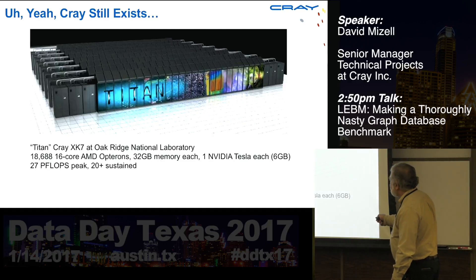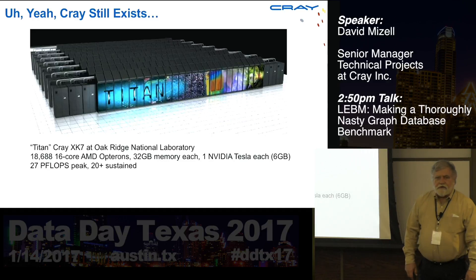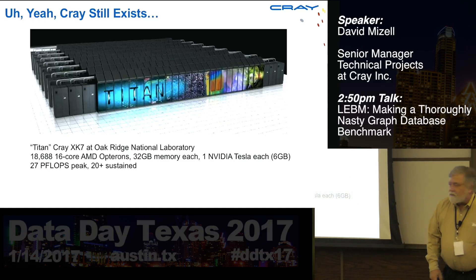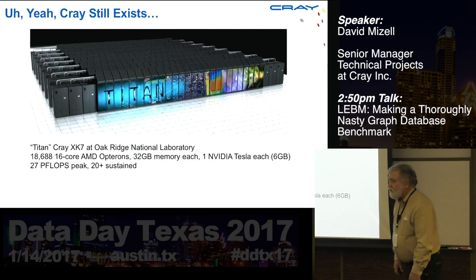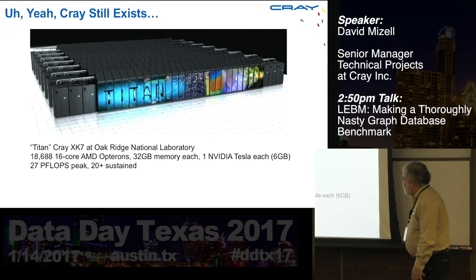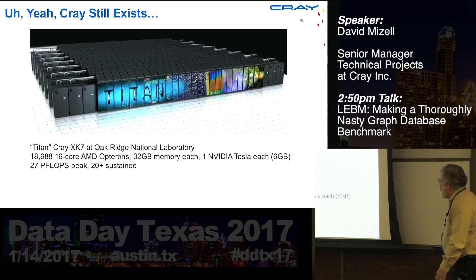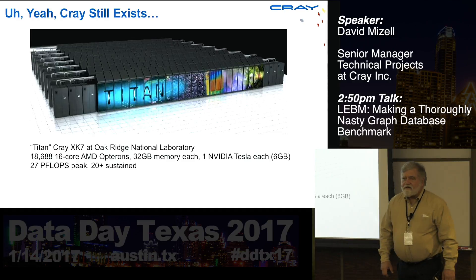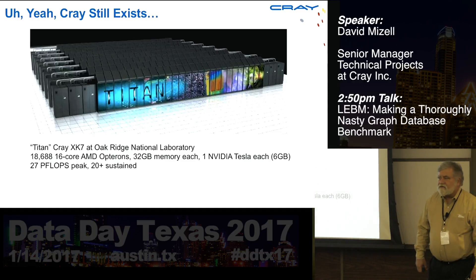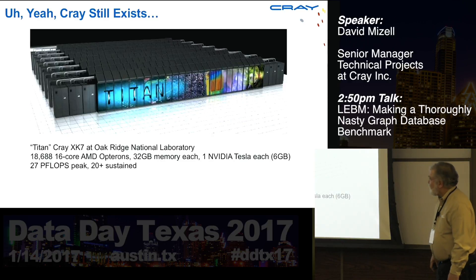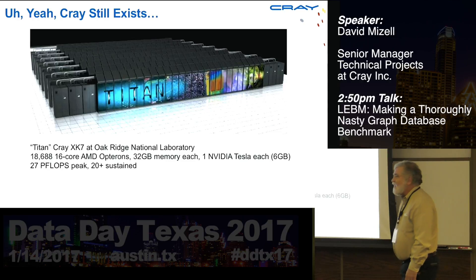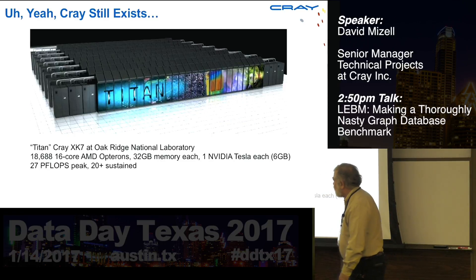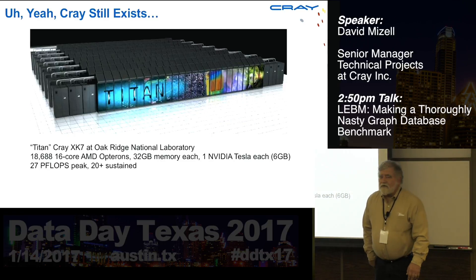Each one of these cabinets holds about 392 processors. So you multiply that out, you're talking about closing in on 19,000 AMD Opteron processors with 32 gigs of memory each. Each one also has an NVIDIA Tesla with 6 gigs of its own memory. It's about a 27 petaflops system, and on several real-world applications it's sustaining 20 petaflops performance — and for a hundred million dollars, one of these can be yours.